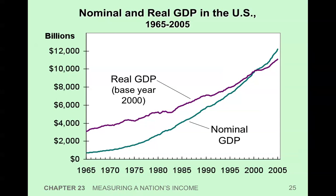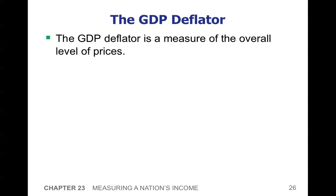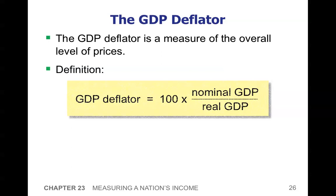Let's go on to one more measure of GDP, and that's called the GDP deflator. The GDP deflator is a measure of the overall level of prices — it's a measure of inflation. We will look at CPI, Consumer Price Index, in the next chapter. The GDP deflator is defined as 100 times the nominal over the real GDP.